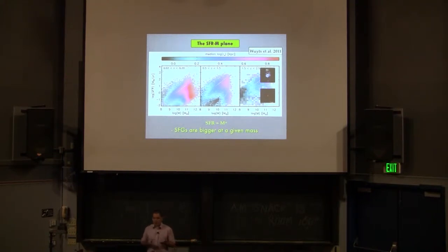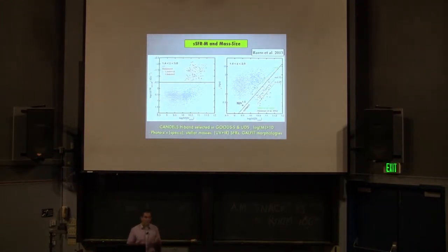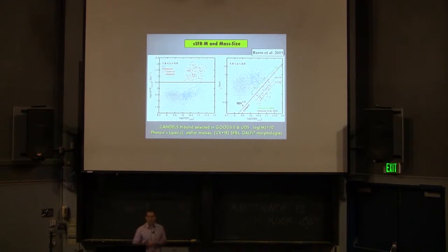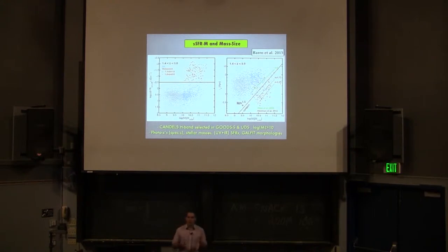To investigate this process, we grabbed a sample of CANDELS data, which includes some of the most fantastic, deepest HST photometry in the so-called deep fields. It also includes a lot of far-infrared photometry that allows us to compute very accurate redshifts, stellar masses, and also star formation rates.